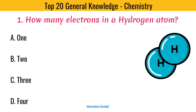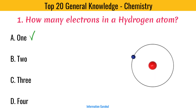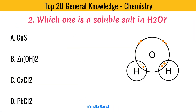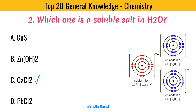How many electrons in a hydrogen atom? One. Which one is a soluble salt in H2O? Calcium chloride.